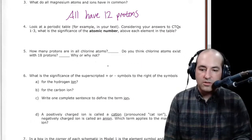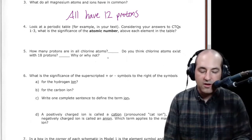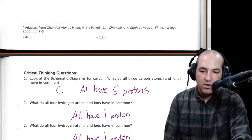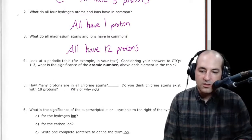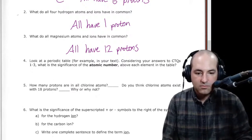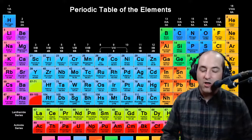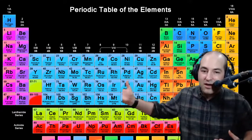So then looking here, how many protons are in all chlorine atoms? How do you think you can figure that out if it's not given in the model? Well, in this case, we're given a hint here above. Look at a periodic table. So let's look at a periodic table. I know I said not to use other references, but a periodic table is always there. We assume it's always there.